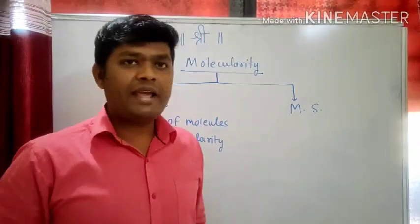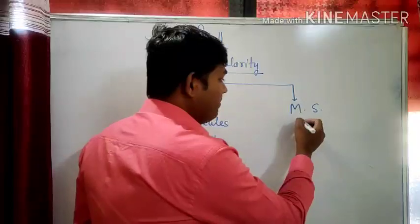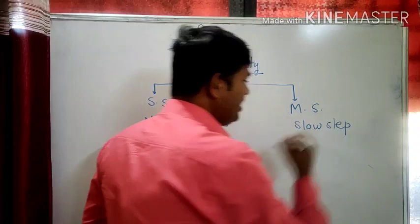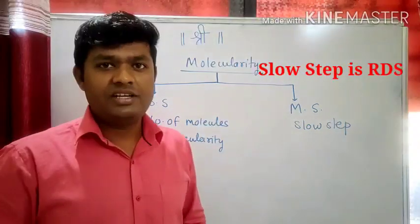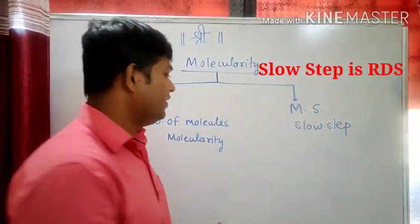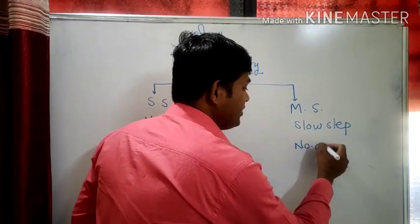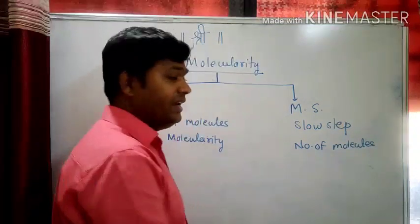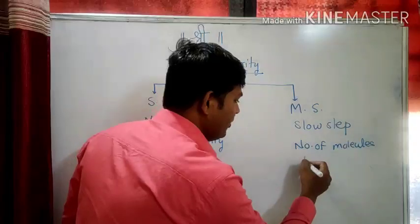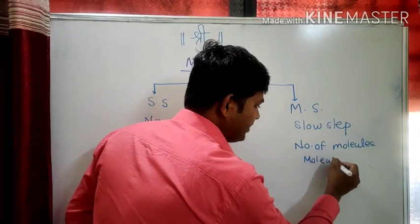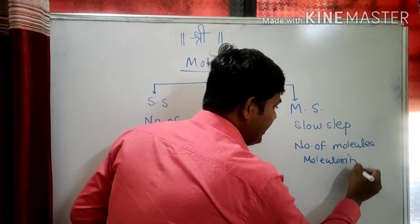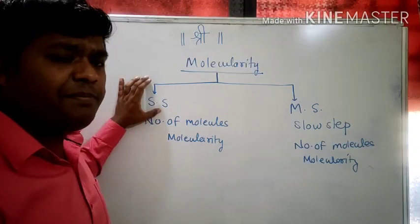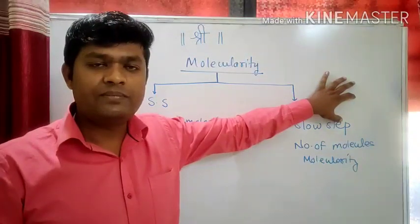For a multi-step reaction you have to see out of many steps which is the slow step of the reaction. By knowing this slow step, see the number of molecules involved in that slow step. The number of molecules involved in the slow step will be the molecularity of the reaction. So to predict the molecularity of a reaction, first of all you should know whether the reaction is a single step or a multi-step reaction.